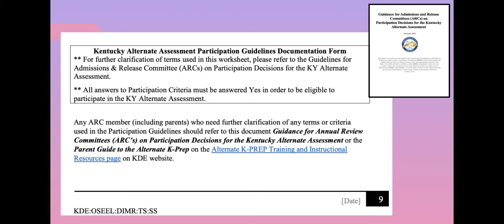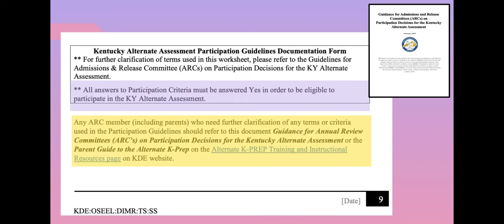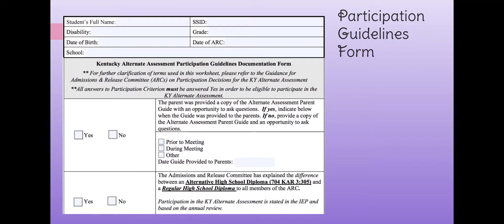Moving on to page nine, I encourage you to highlight this section first. Before a student can be found eligible for the Kentucky Alternative Assessment, we have to go through the participation criteria step by step, and every question has to be answered yes in order for that student to be eligible. Note this paragraph — highlight it and give it a star. Any ARC member, including parents, who needs further clarification of any term or criteria used in the participation guidelines should refer to the Guidance for ARCs on Participation Decisions for the Kentucky Alternative Assessment, or the Parent Guide to the Alternative K-PREP. Those are key resources we want to make sure we're sharing with parents.